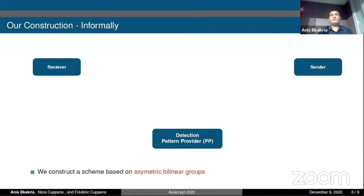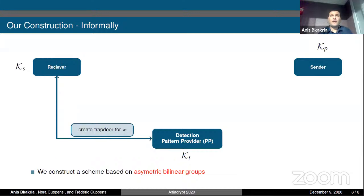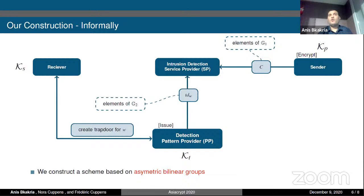Let me give you an overview of the construction. At a very high level, the receiver starts by generating a secret key, public key, and a trapdoor generation key. Then the pattern provider and the receiver interactively generate the trapdoors for the patterns to be searched, and those trapdoors are sent to the service provider. The sender then fragments the data to be sent, encrypts them, and sends them to the service provider, who will use the trapdoor to check the presence of the patterns in the encrypted data. Finally, the receiver can use the secret key to decrypt the data.